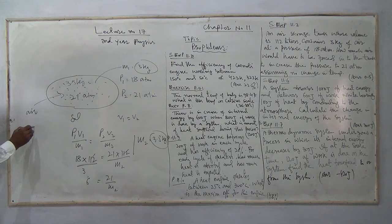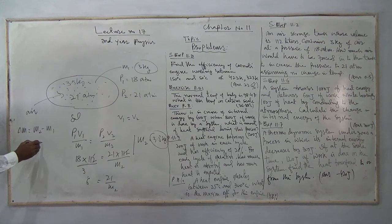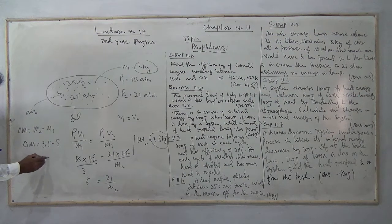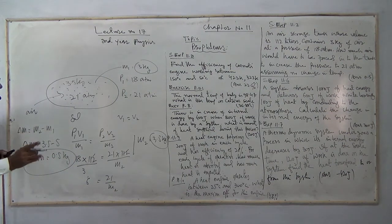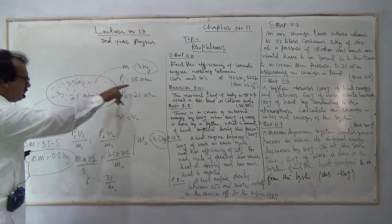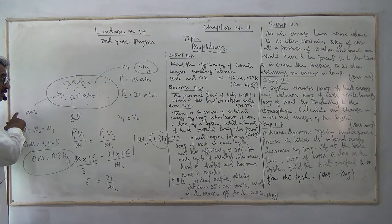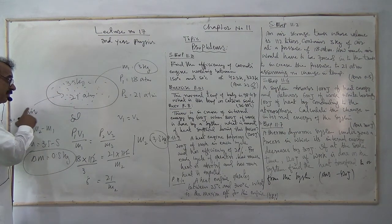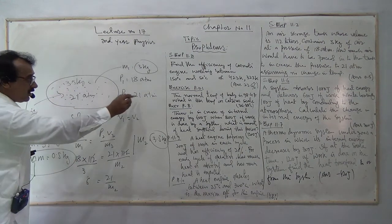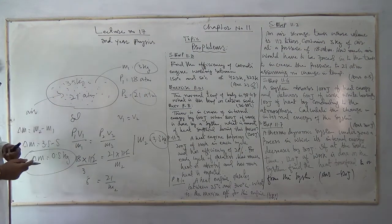You can find the change in mass: ΔM = m2 minus m1 = 3.5 minus 3, so the change in mass is 0.5 kg. The total mass is 3.5 kg at the new pressure.